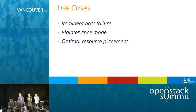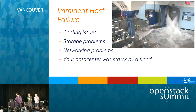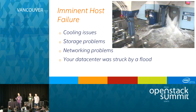We're going to talk about three use cases. The first one is imminent host failure, the second is maintenance mode, and the third is optimal resource placement. Let's start with imminent host failure. Imminent in this context means that we still have control over our host, but we presume it may go down at any moment and we want to play it safe and migrate out of it.